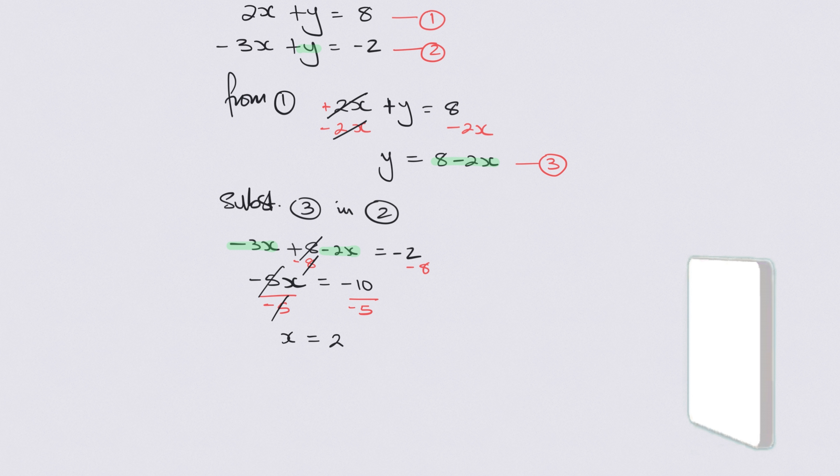You might think at this point that you've finished but you're not because now you need to go and find y. After all, it's a pair of simultaneous equations and you need two answers. You need one for variable x and one for variable y.